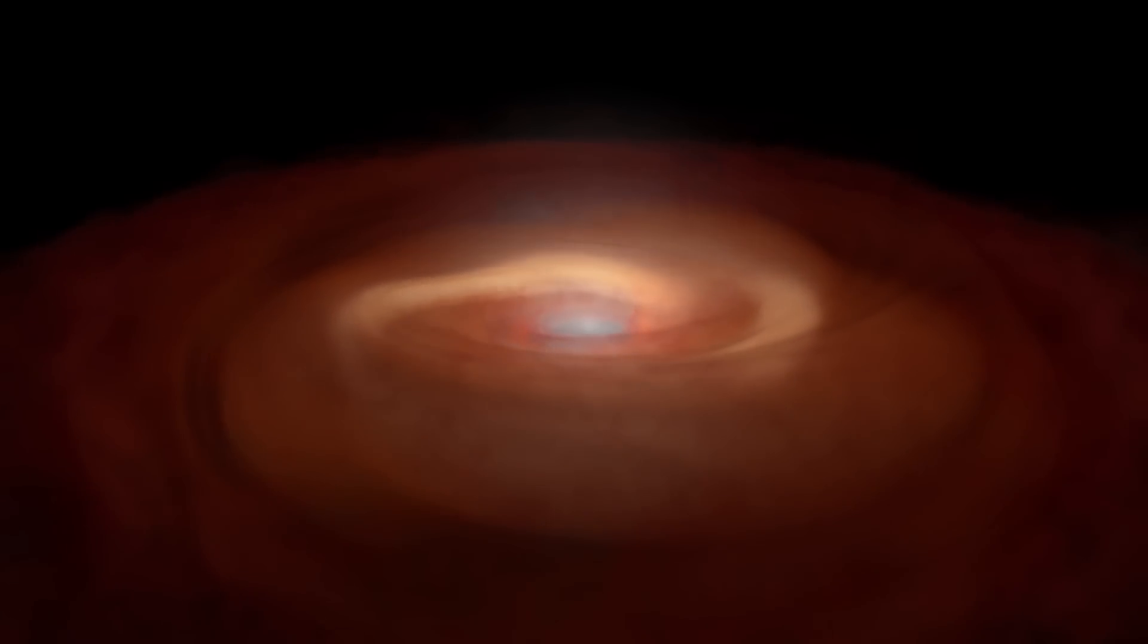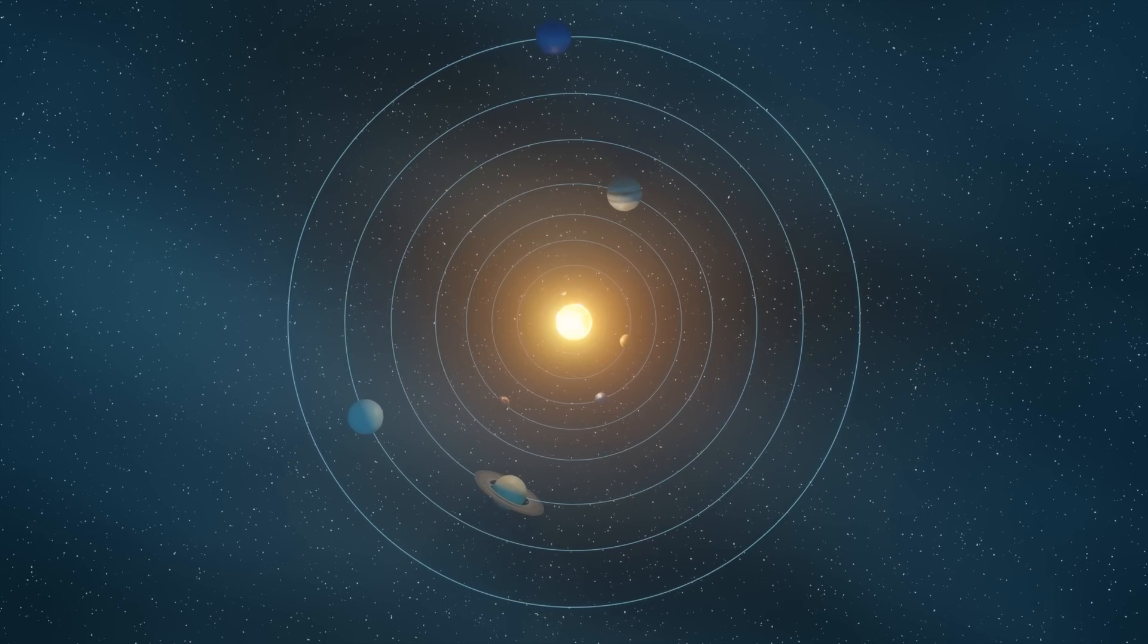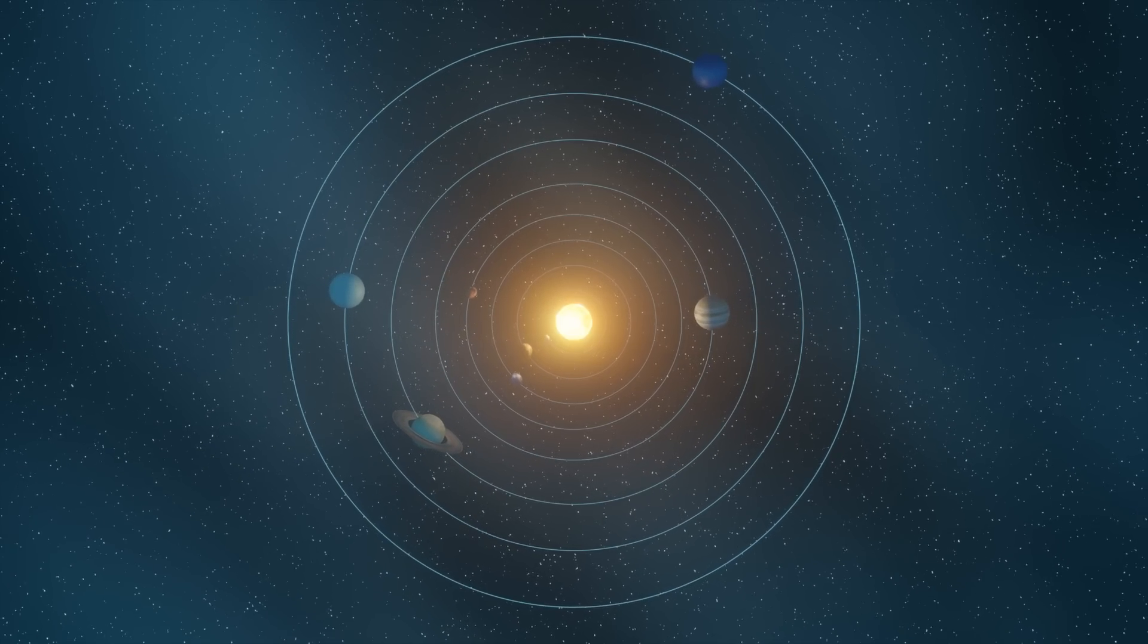Eventually, they got so massive that gravity smoothed them out into a nice, round ball, like the planets and stars we see today.